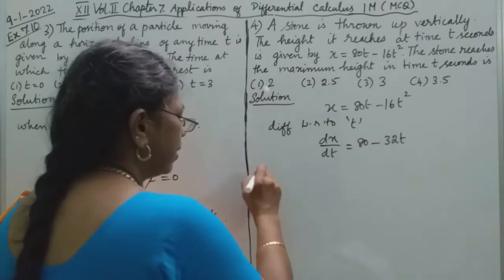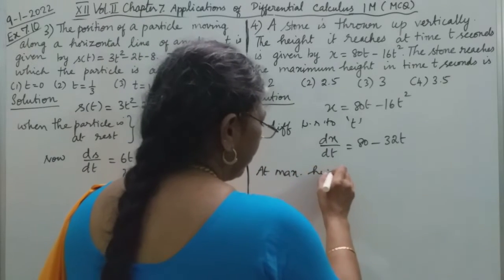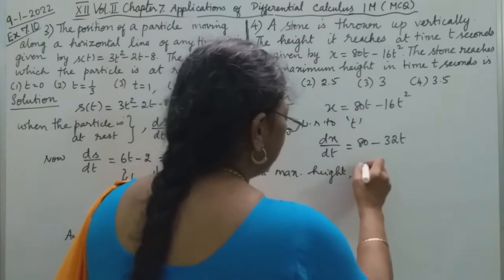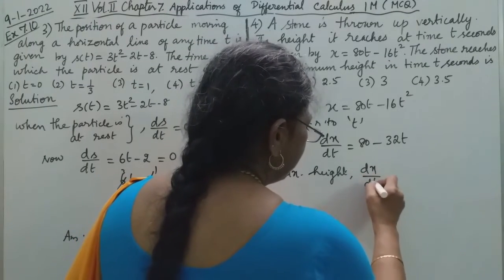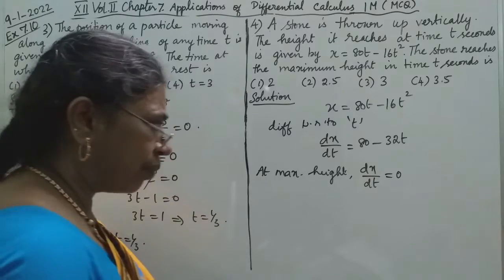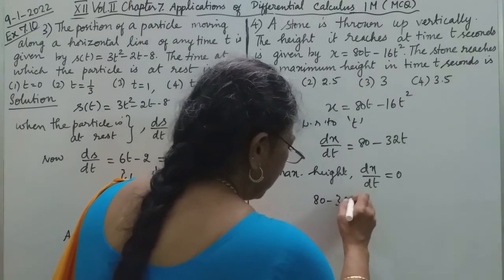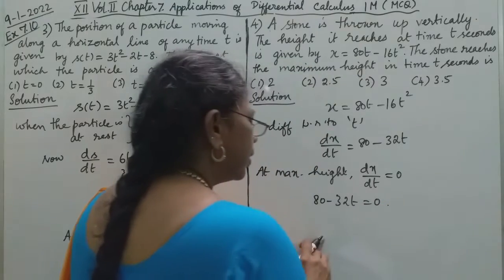At maximum height, the velocity is zero, so the rate of change of x with respect to time will be zero. Therefore, 80 - 32t = 0.